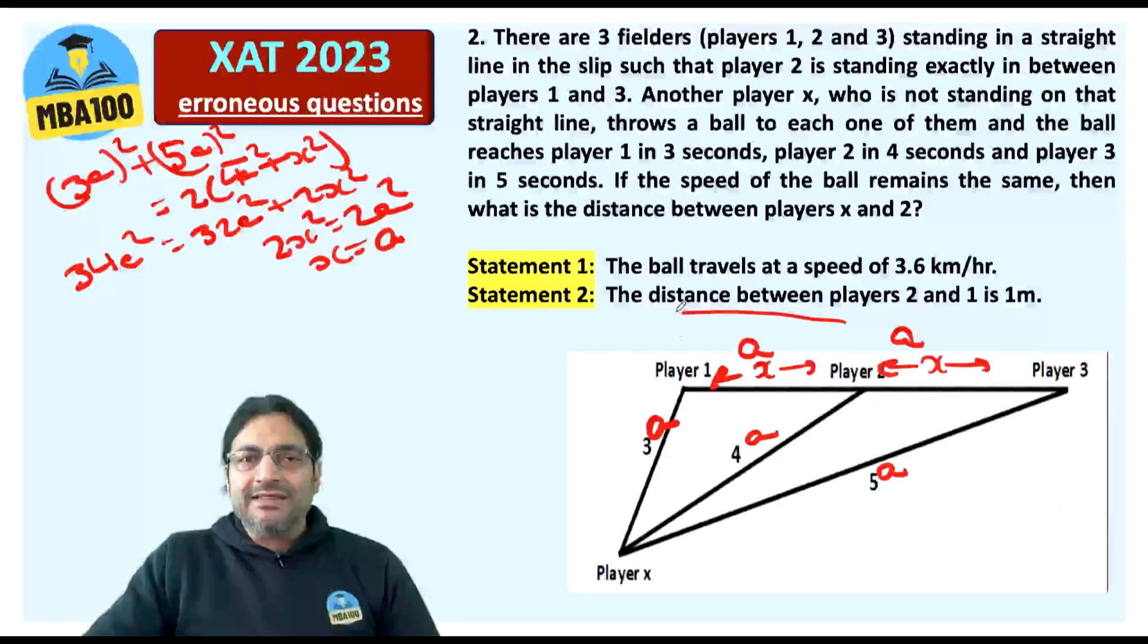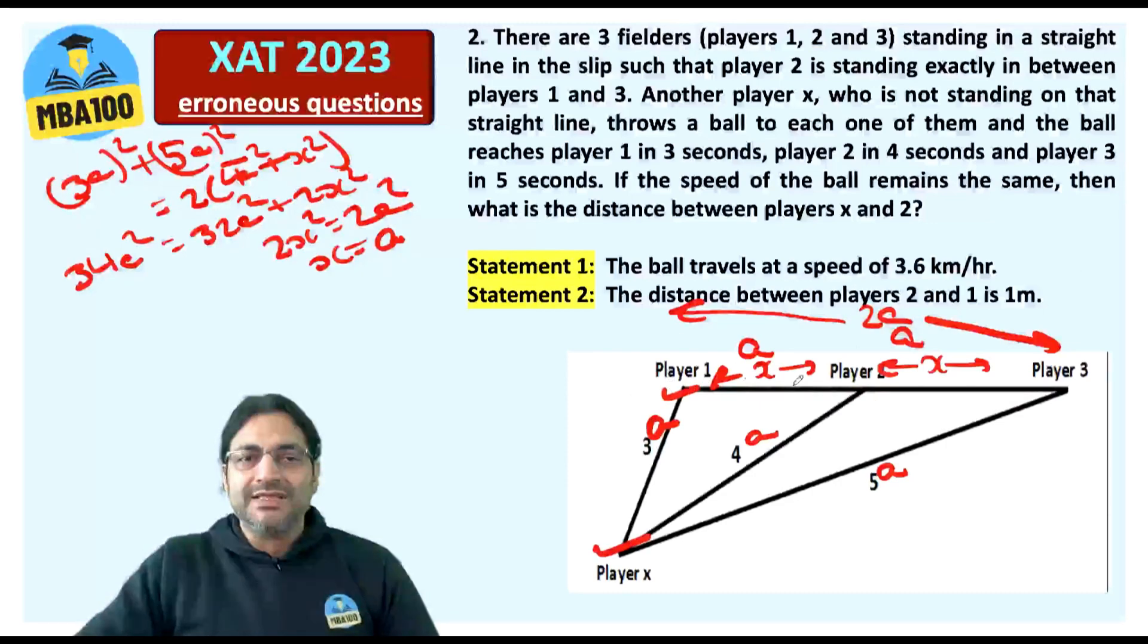So let's put A here as well as here. So what is this length? This length is 2A. Now please consider the largest triangle on the screen with vertices, this one, this one and this one. This side is 3A, this is 3A, this is 5A and this is 2A. 3A + 2A is 5A and the third side is 5A.